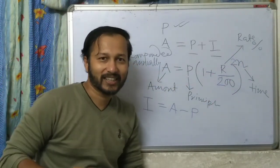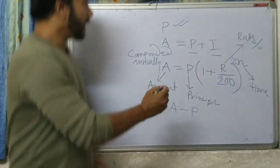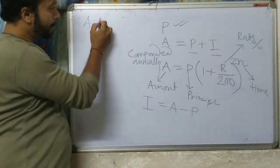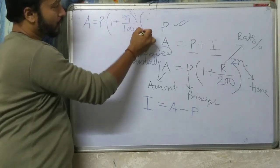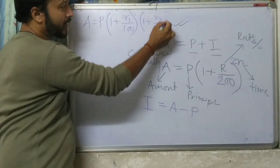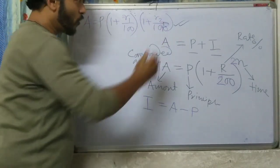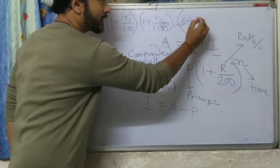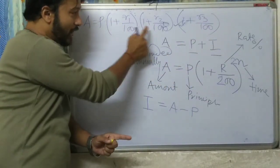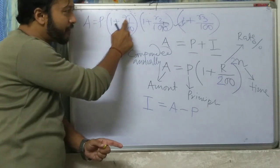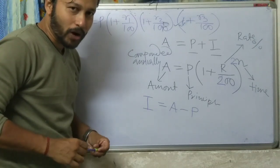With this formula you will get the amount: P into (1 plus R1 by 100) into (1 plus R2 by 100). If there is more percentage, add (1 plus R3 by 100). This is used when there are different percentages for different years. Now we can start with the questions.